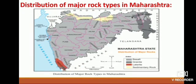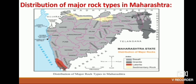Distribution of major rock types in Maharashtra: Figure 7.1 shows the distribution of major rocks in Maharashtra. The basalt rock formed out of volcanic eruption has spread over a vast region of our state. Granite rock is found in the eastern parts and in South Konkan. Laterite is found in South Konkan. Because of thick and extensive layers of basalt, Maharashtra does not have large reserves of mineral wealth. Therefore, mining activity is concentrated in South Konkan and in eastern Maharashtra.